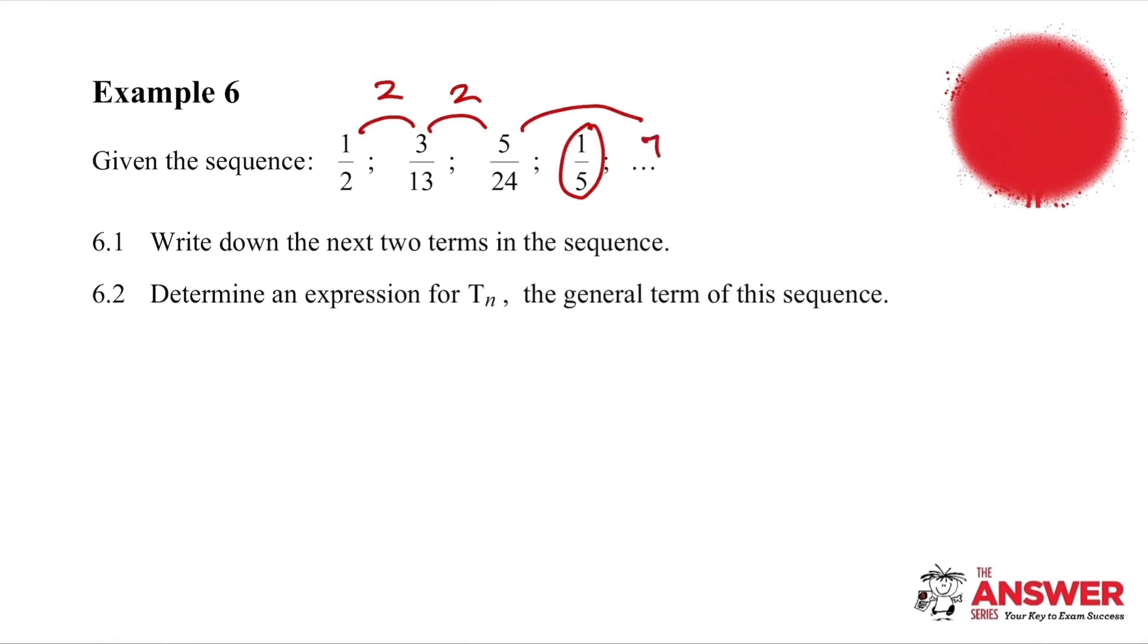That would be 7. And then if we continue that, the next one would be 9. Now if we go to the denominators, we've got big gaps this time of 11, and 11 again. So now we're going to take a gap of 11, which will give us 35. Now pause and think about this. And 7 over 35 is in fact 1 fifth.